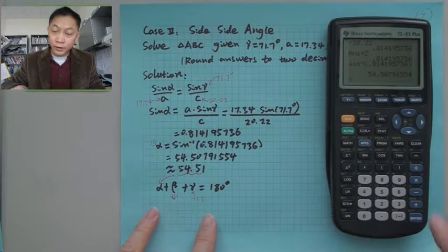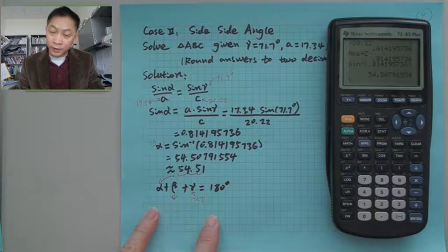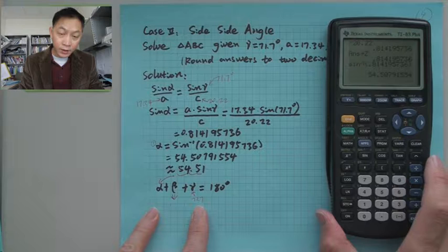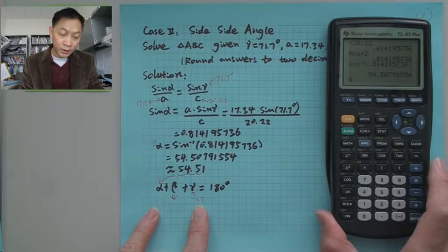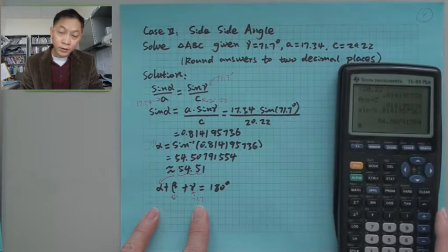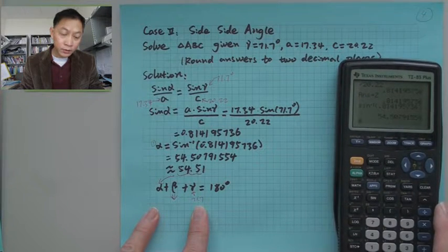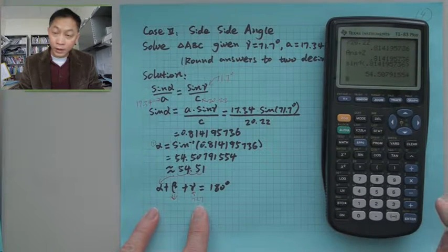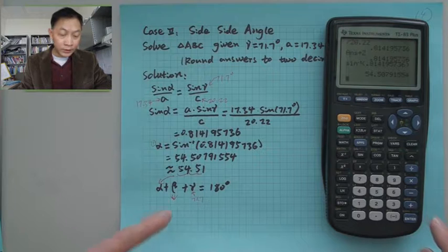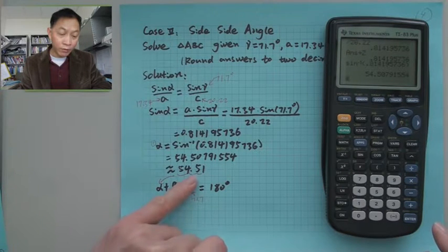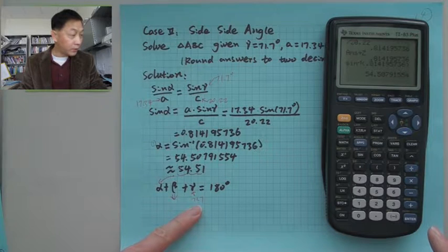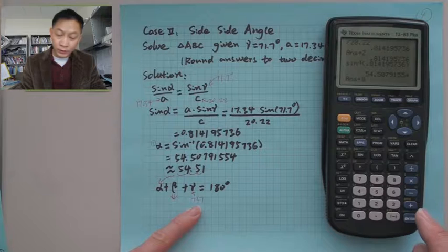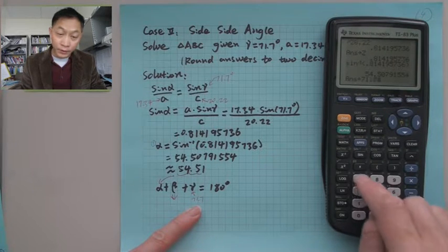Now, 54.51... Let me store this 54. Do I need alpha? Yeah, probably I don't need alpha. I only need beta. So in this way, I can use this number plus this number. 54.51 plus 71.7. So let me add those two. 71.7 degrees. This is the middle answer, middle steps.